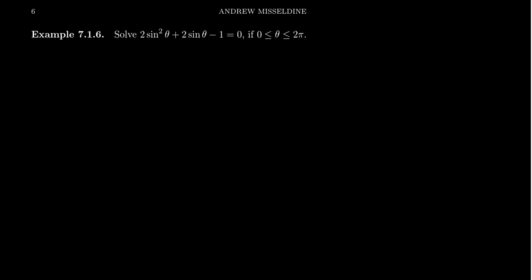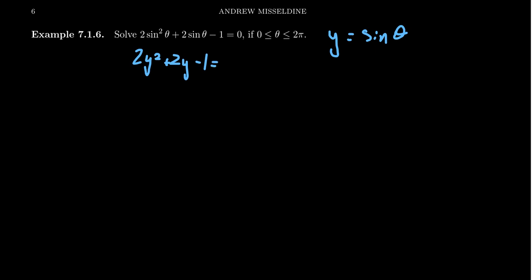Let's try another example: 2sin²(θ) + 2sin(θ) − 1 = 0, again on [0, 2π]. With the substitution y = sin(θ), this polynomial looks like 2y² + 2y − 1 = 0. We could try to factor this one.